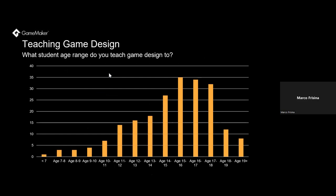We're also often asked at what age GameMaker is taught. As you can see from the graph, there is a range of ages. The most important age groups we'll cover today are broadly 12 to 14, 15 to 16, and 17 plus — with 15, 16, and 17 plus being at the peak, and from age 12 is where it slowly ramps up to those age groups.